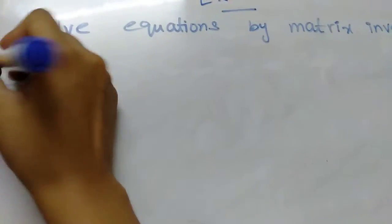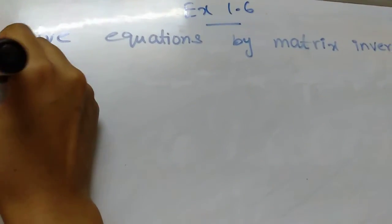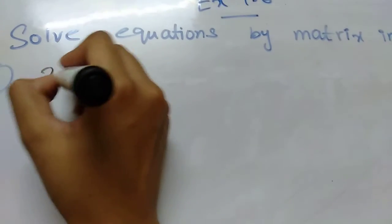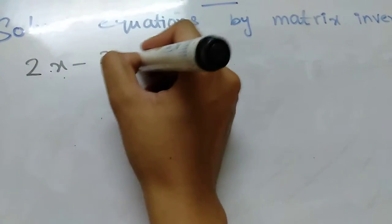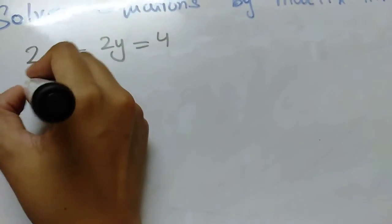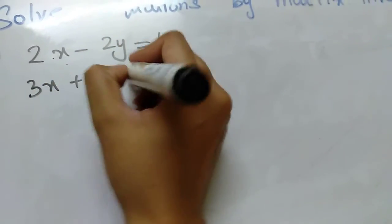So our first equation is, we will write our first question part number 1. So our equations are 2x minus 2y equals 4 and 3x plus 2y equals 6.